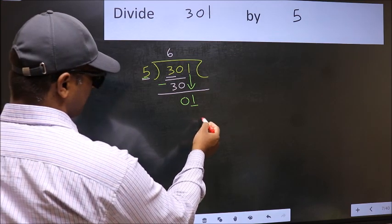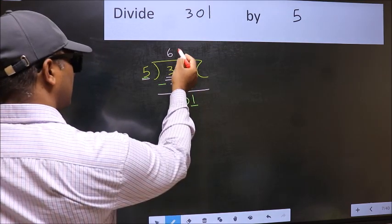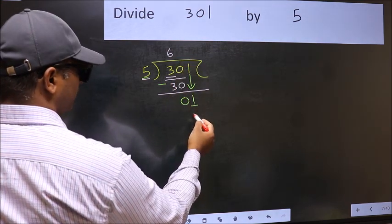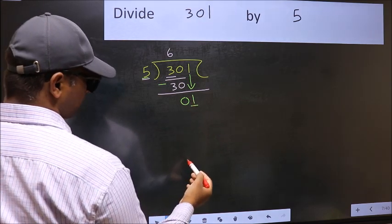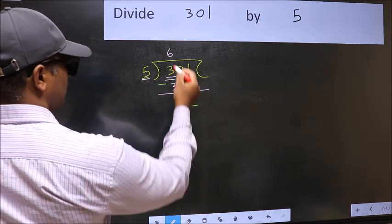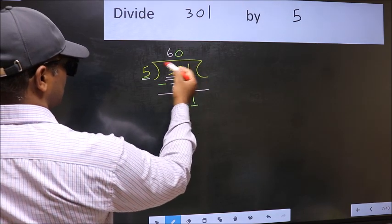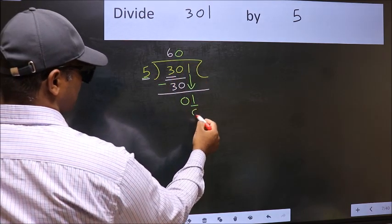If I take 1 here, I will get 5. But 5 is larger than 1. So what we should do is we should take 0. So 5 into 0, 0.